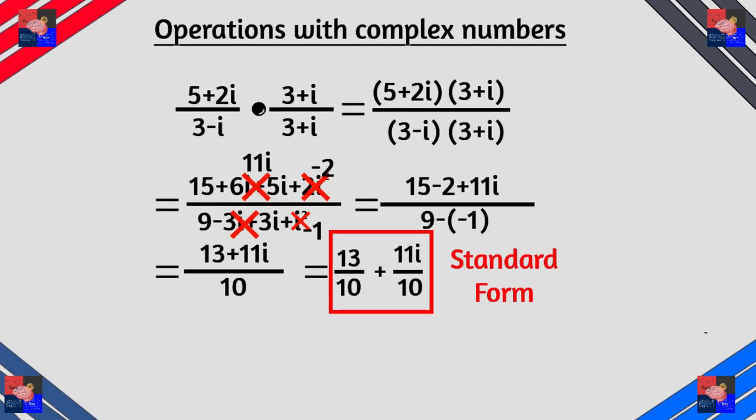So we have (13+11i) over 10 or in standard form 13 over 10 plus 11 over 10 i. Now this might not exactly be neat but this is the final answer.